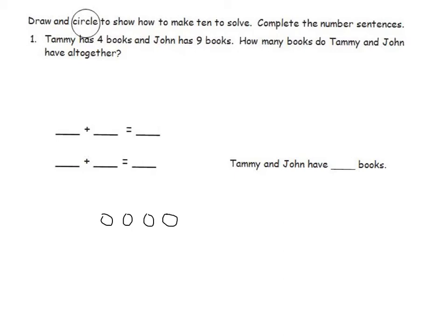And 9 circles to represent John's books. 1, 2, 3, 4, 5, 6, 7, 8, 9. I will then label Tammy's books with a T and John's books with a J.